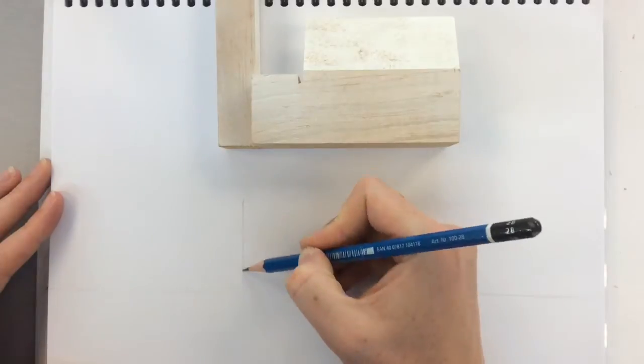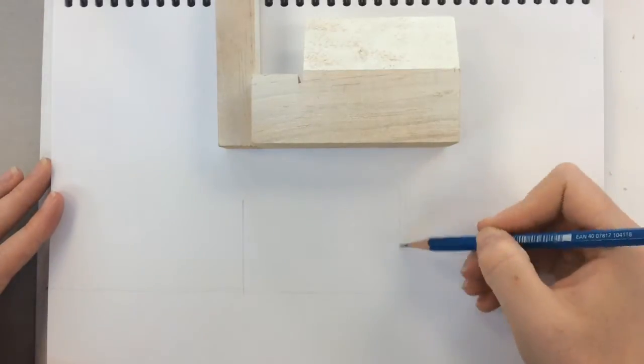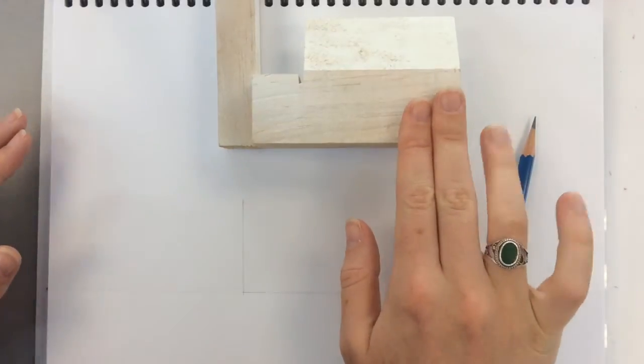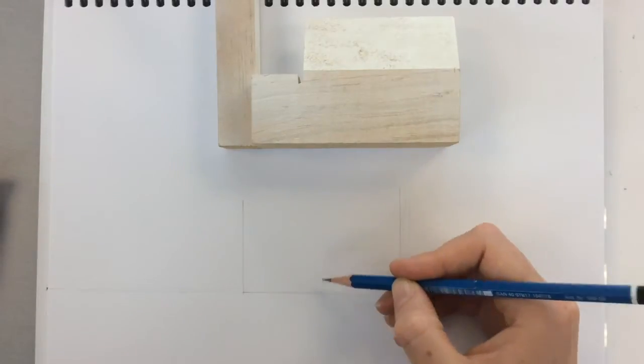We're going to think about the 2D views of this shape and I'm going to look at this particular view and what surfaces I can see. I'm thinking about the proportions of it.